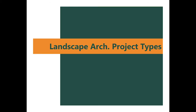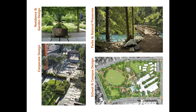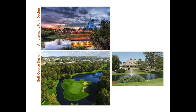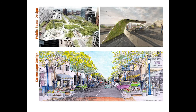What kinds of projects do Landscape Architects do? You may think mowing lawn or trimming your yard is what Landscape Architects do, but that's completely wrong. Here are some examples: residential and garden design, corporate design, park and natural preservation projects, and Landscape Architects also contribute to developing innovative and more pleasant environments for school and campus design, amusement park design, golf course design, as well as many public space designs including streetscape design.